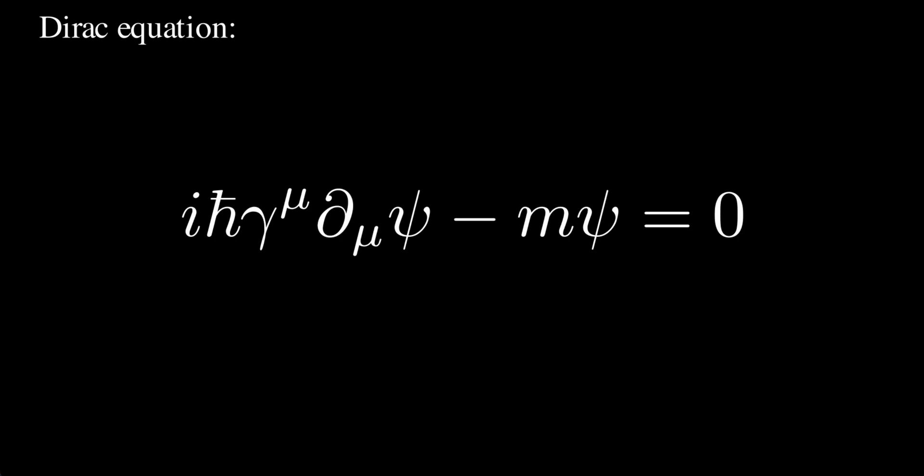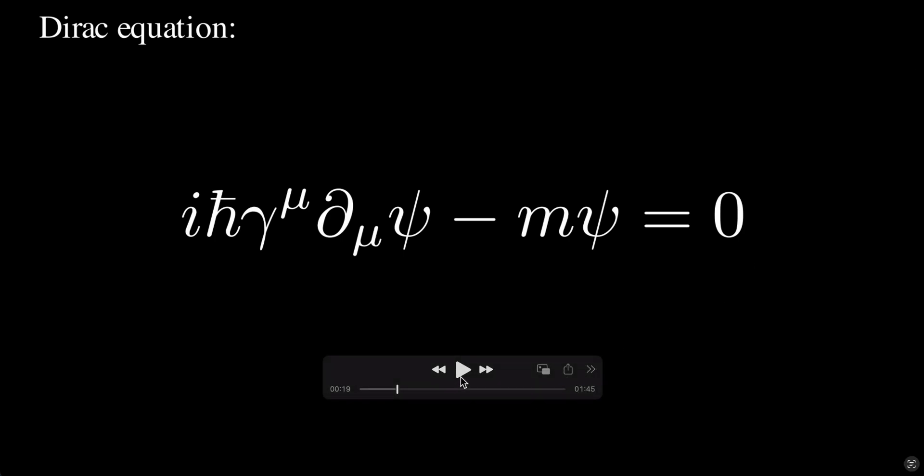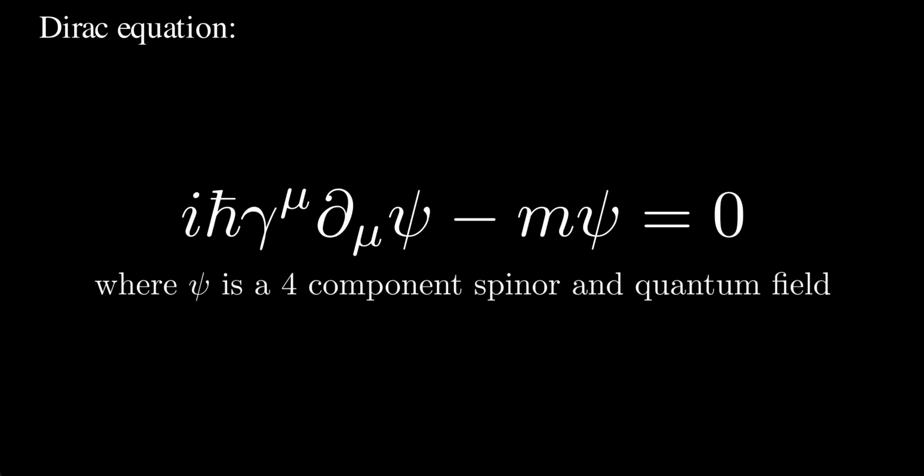When we talk about quantum field theory, Psi is a four-component object — not a vector, but what we call a spinor. In modern quantum field theory, Psi is actually a quantum field, meaning it is also an operator. Because it's a fermionic field describing fermions, it must fulfill the anti-commutator relations when we quantize the theory.